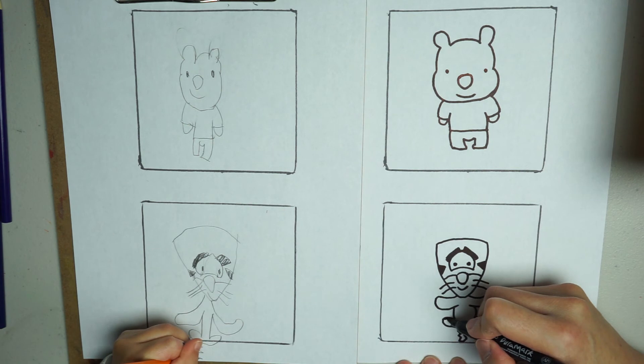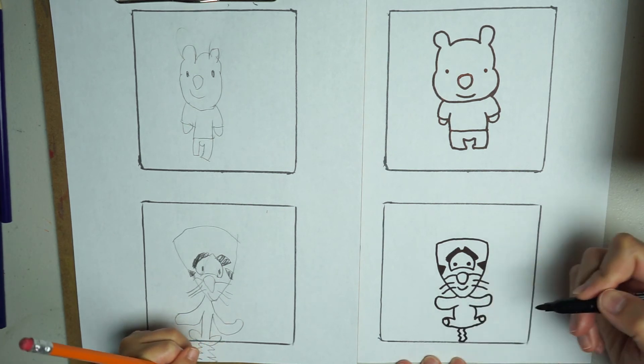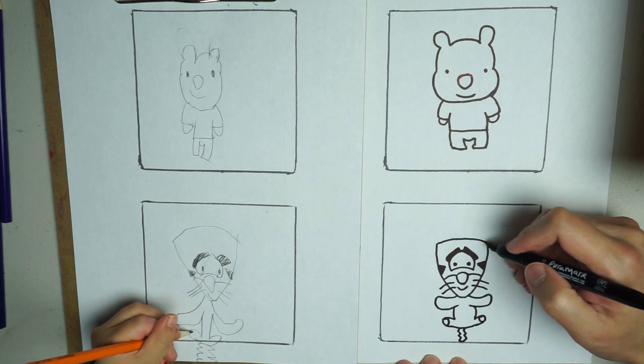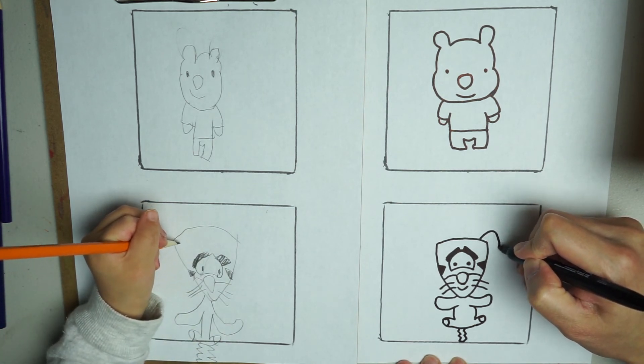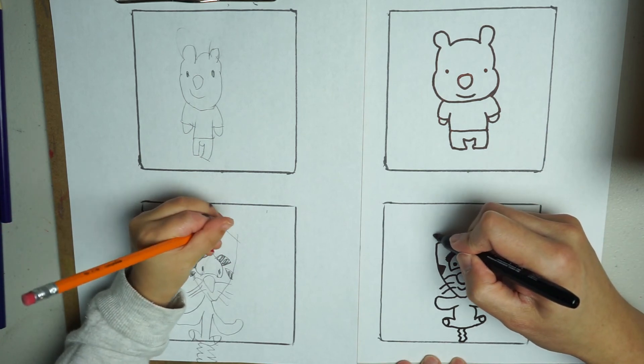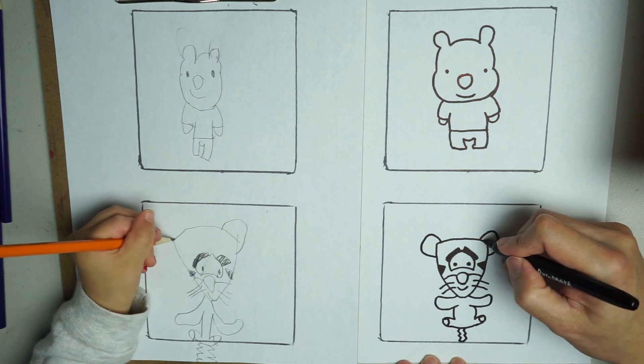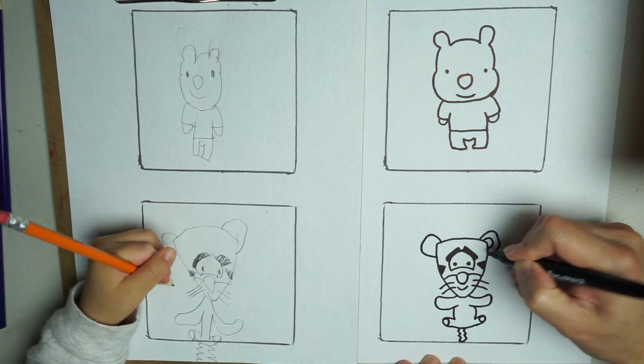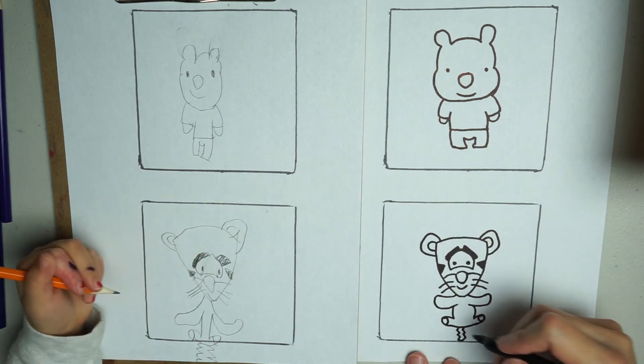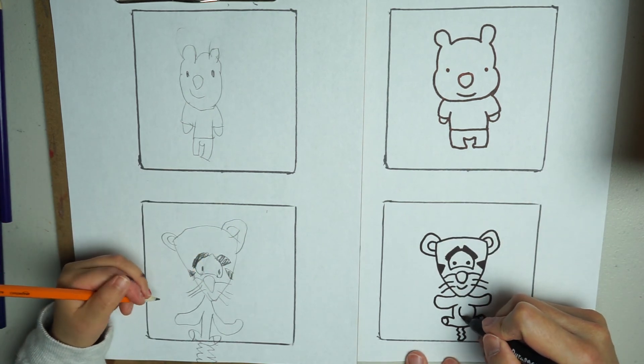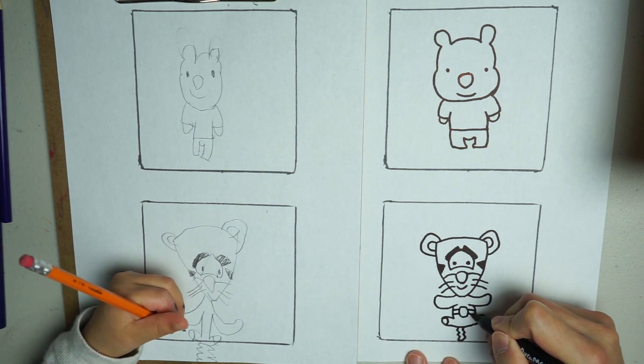Then we will add his paw here. Then we will finish off with his ear. Then we will add his tummy. And a couple of stripes. Okay.